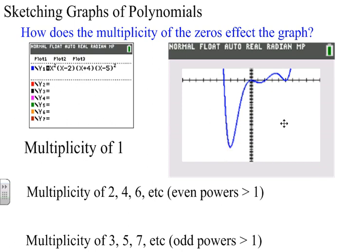What I want to talk about is how to identify multiplicities of zeros and how they affect the graph of a polynomial.